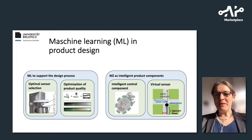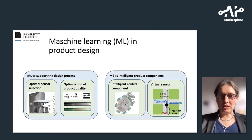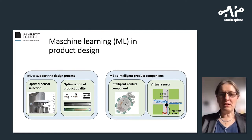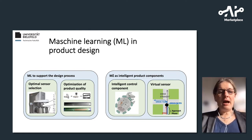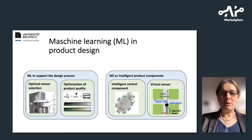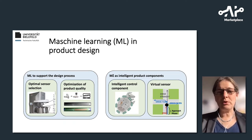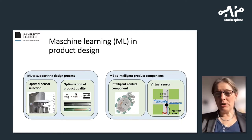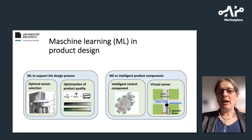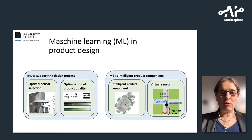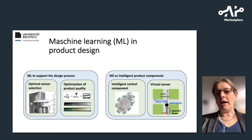Let me first start with a general observation. Machine learning can be used in two stages when products are designed. On the one hand, it can support the design process — for example, how to select sensors or how to optimize product quality before releasing the product. On the other hand, machine learning or AI components are product components on their own, such as control components for intelligent control or virtual sensors.